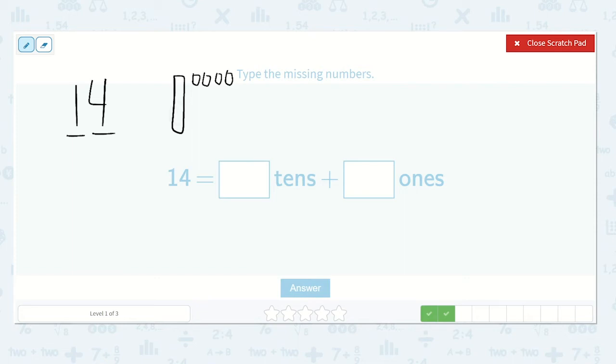Because we have ten, eleven, twelve, thirteen, fourteen. So one ten plus four ones is equal to 14.